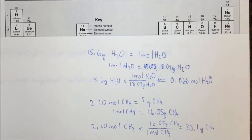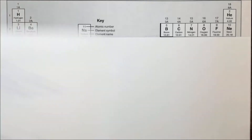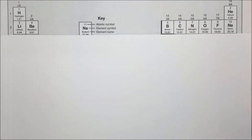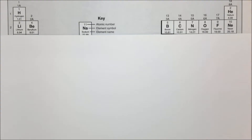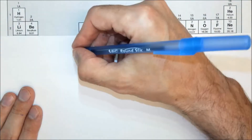Now we need to look at stoichiometry. Stoichiometry involves adding a step, which is converting from moles of one compound to moles of another. Often you're going to need to convert from grams to moles and moles to grams, but really the stoichiometry part is only the part in the middle where you're relating moles of one compound to moles of another using a balanced chemical equation. Let's look at that first, and then put it all together and do all of the stoichiometry for solids.